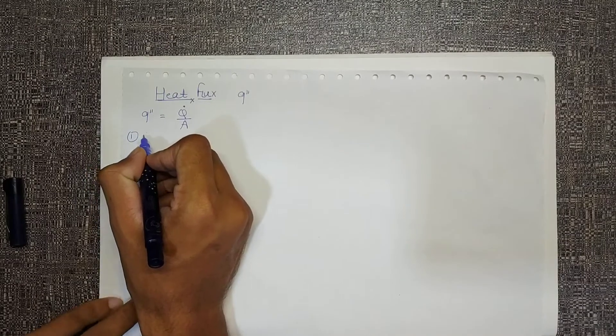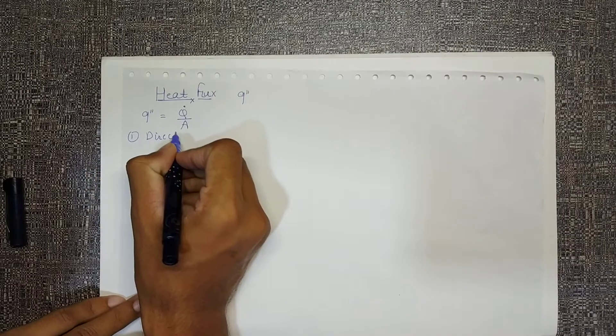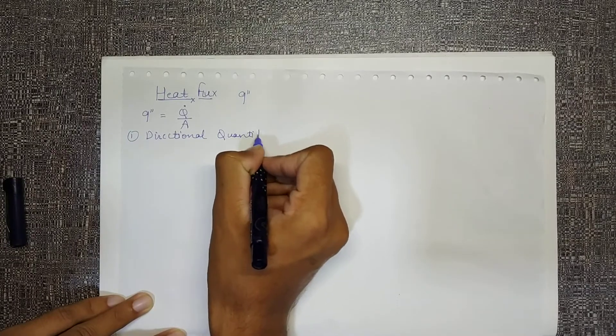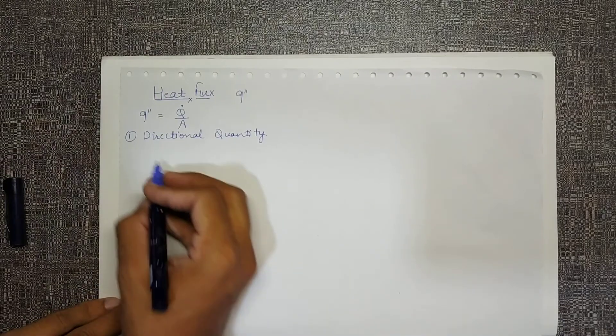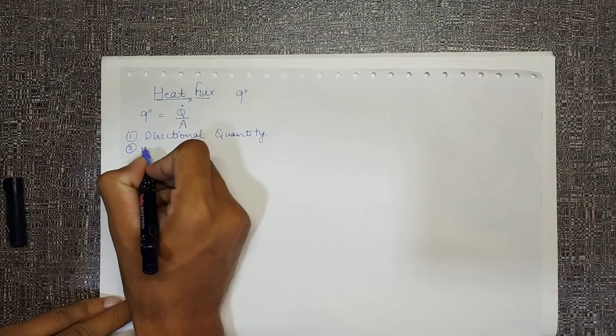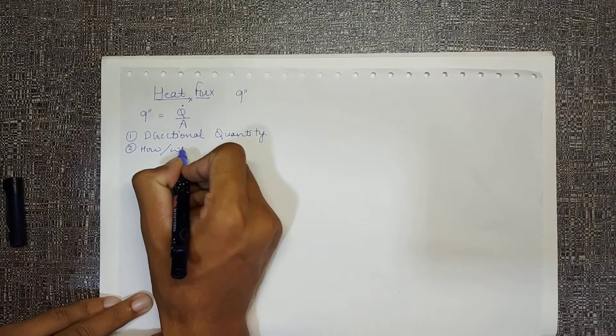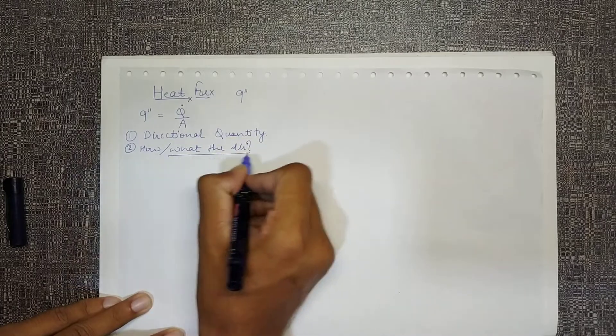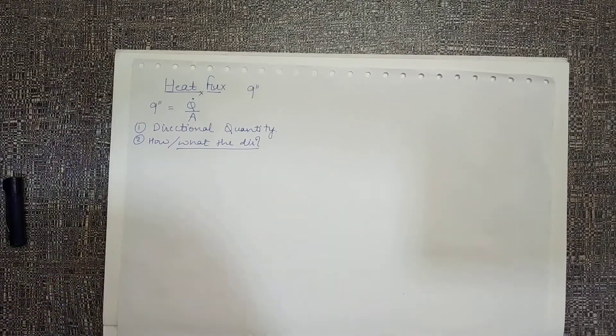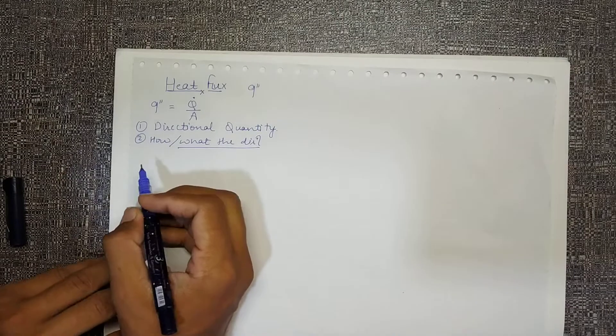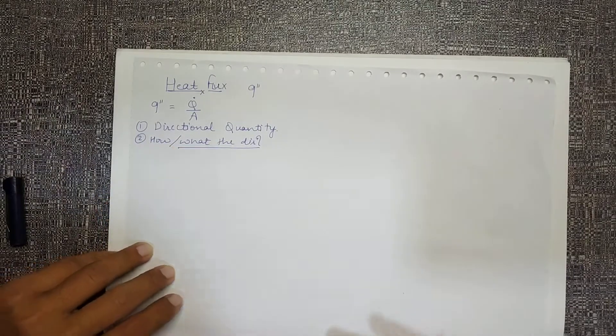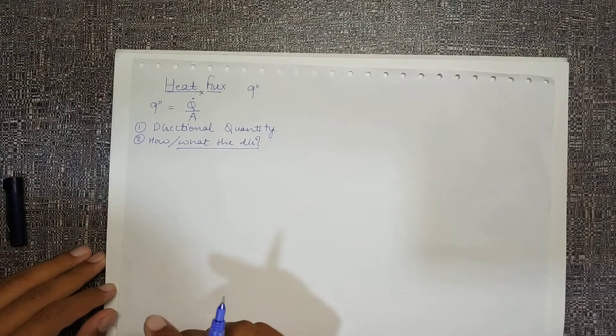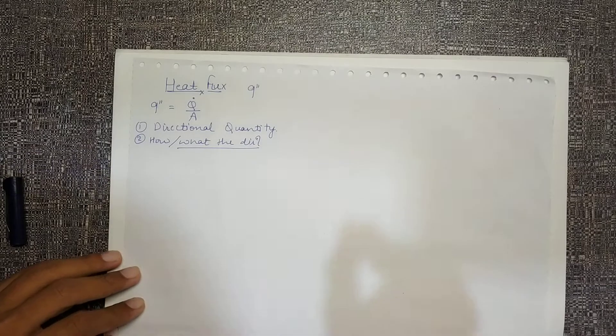First, it is a directional quantity. How do we define direction then? What is the direction? That may be a big question for you. That is defined by the direction being normal to the cross-sectional area A and it is in the direction of decreasing temperature.